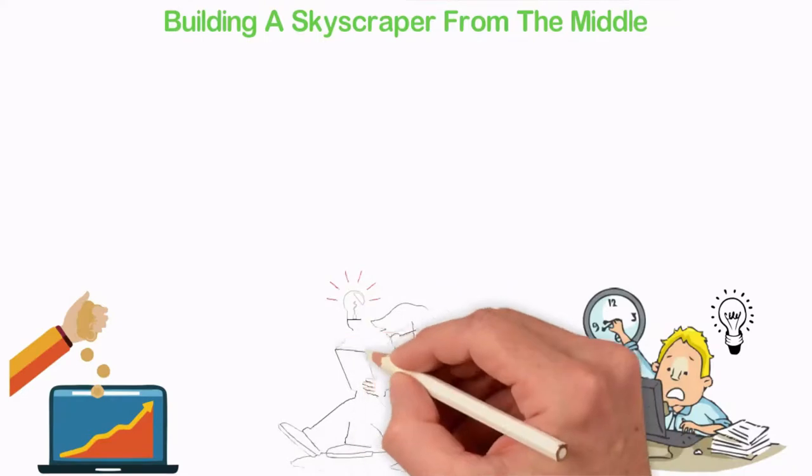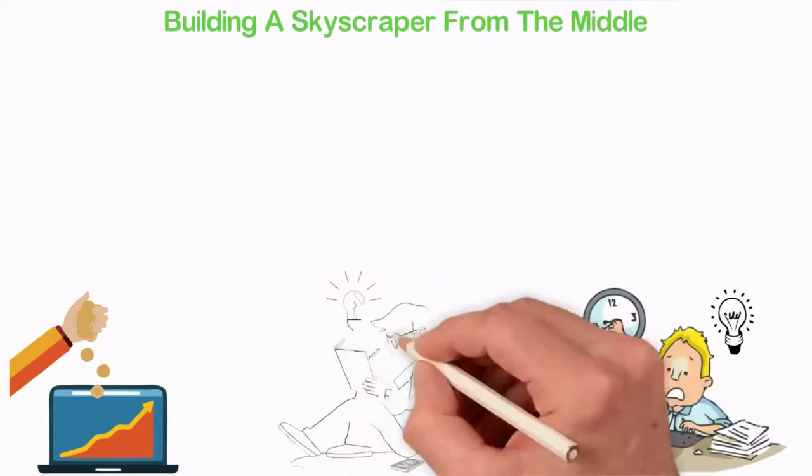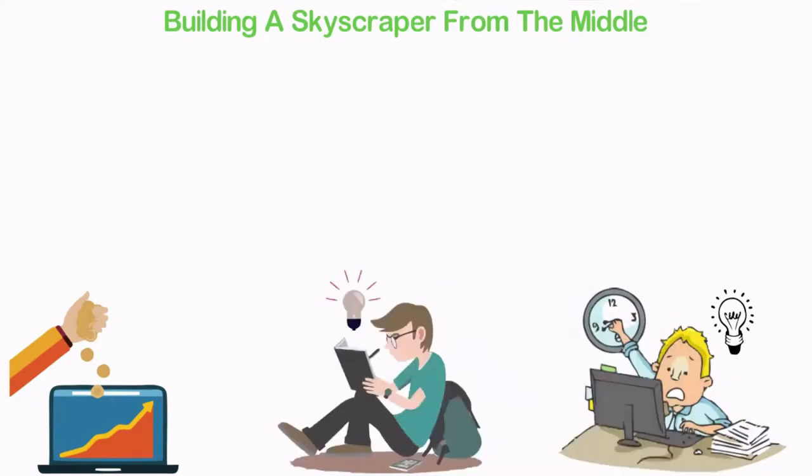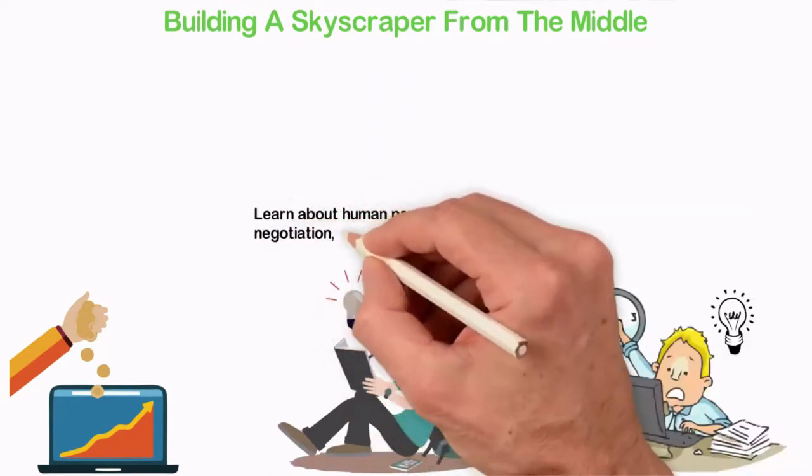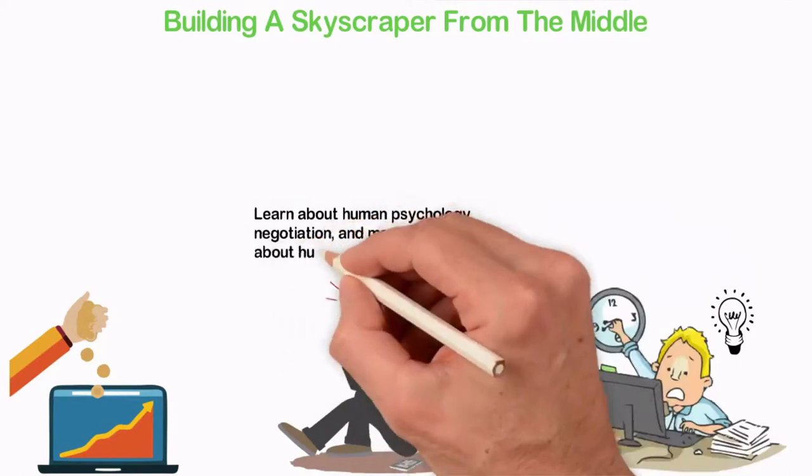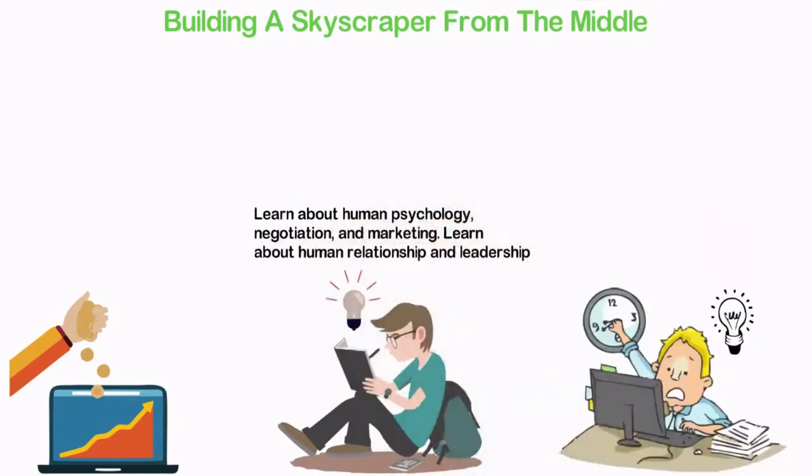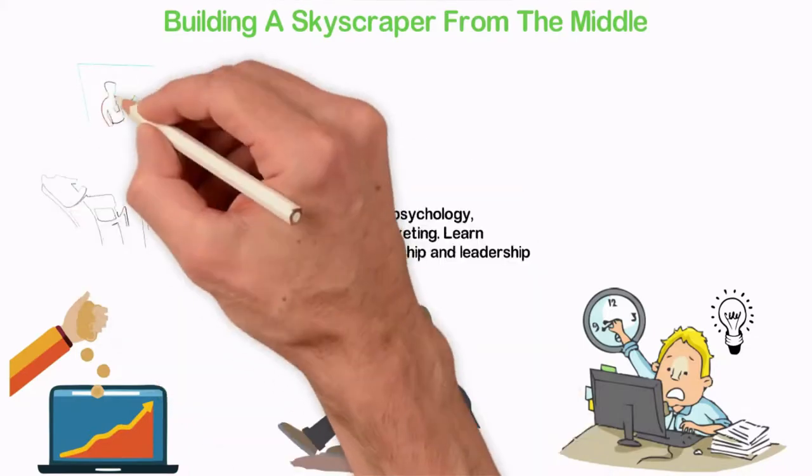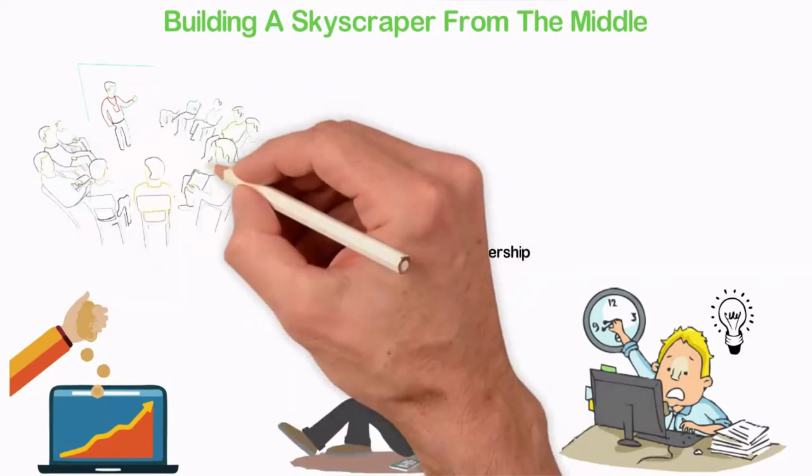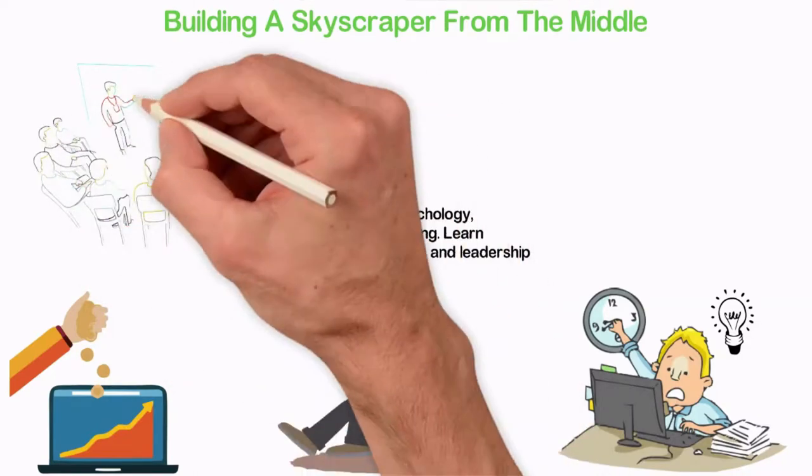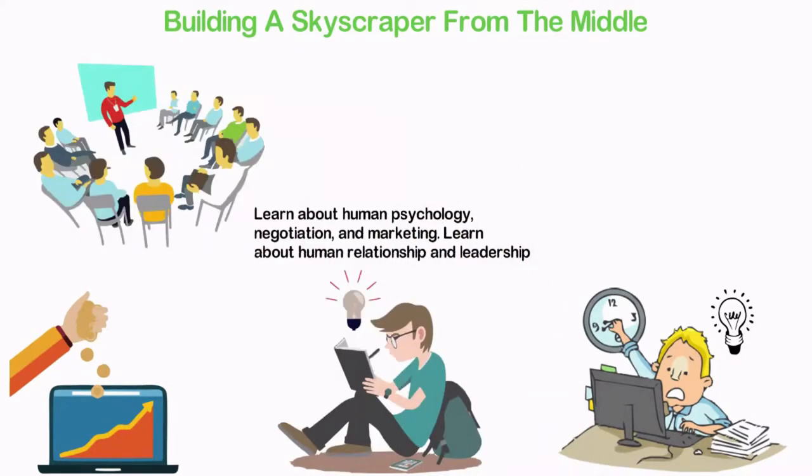Read books from the people who have achieved what you want to achieve and learn about the subjects an average man won't care about. Learn about human psychology, negotiation and marketing. Learn about human relationship and leadership. If you don't know books you should read on these subjects, search Google for best books on any one of these. As you struggle to build one block and another and learn, then try and persuade people to support your vision.